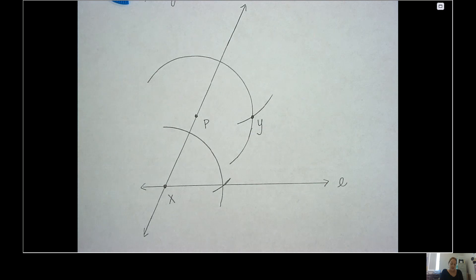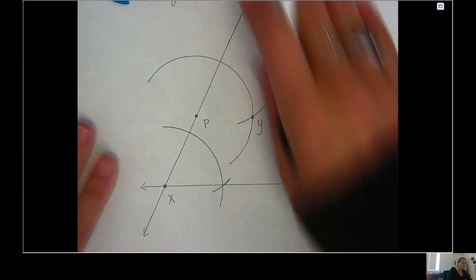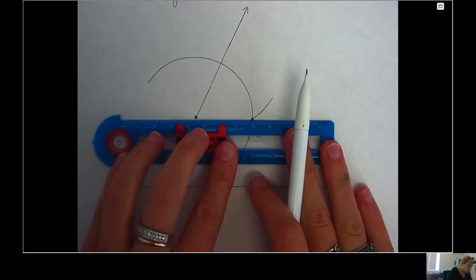Okay, so now with this new arc I've got my new point Y, so I'm going to use a straight edge and I'm going to create line PY. So it should go through those two points that you've just created.